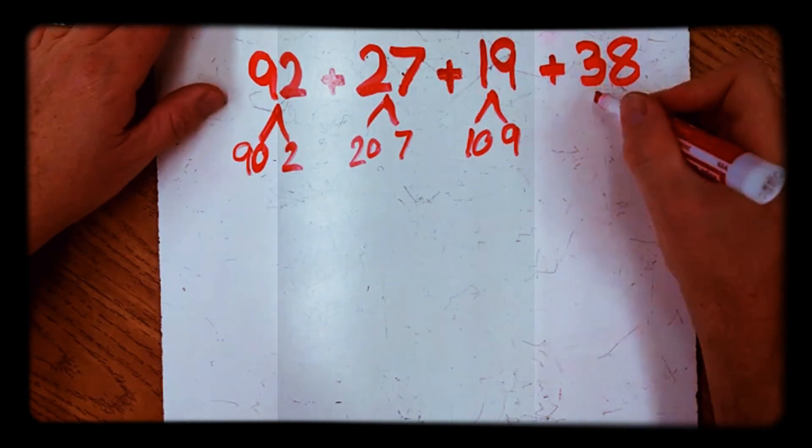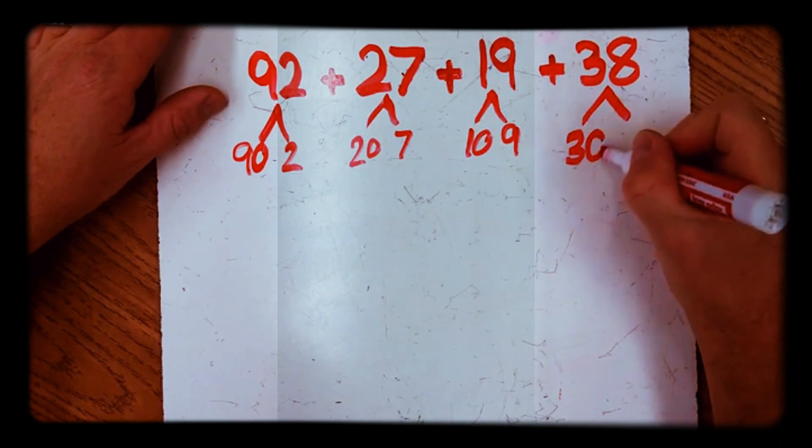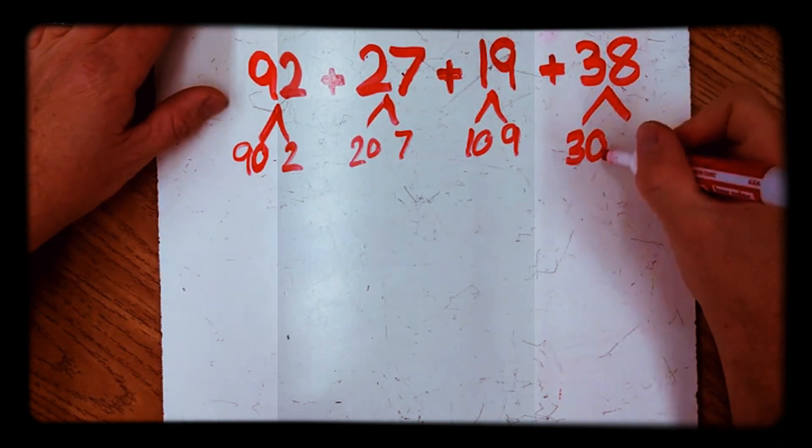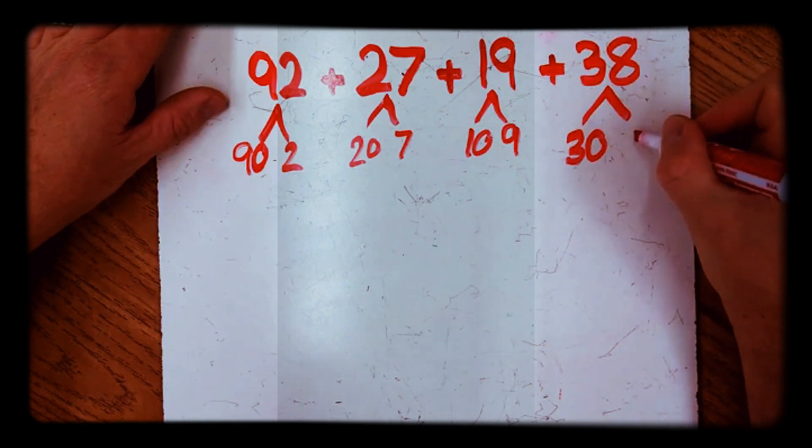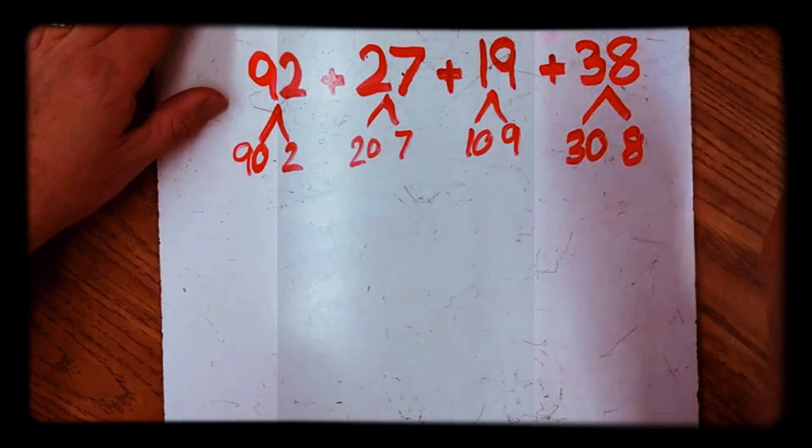And while you're writing out your numbers, make sure that you write neatly, so that way you don't accidentally fool yourself into thinking that a zero is a six or something like that. I've seen that happen many times, and right off the bat, before you even start the problem, it's wrong.